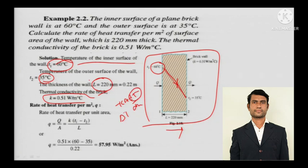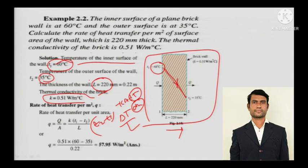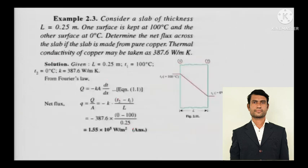Here dT is actually delta T and dx is L. In my previous numericals, you were seeing T2 minus T1. You can actually multiply the minus sign inside, giving T1 minus T2. This is the kind of solving you can do with multiplication of the minus sign inside. This is the answer — a very simple numerical with a very illustrative diagram.